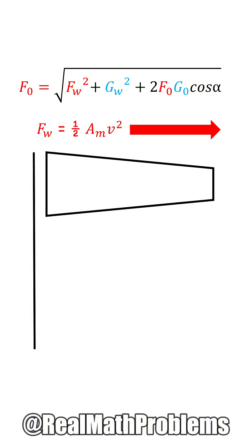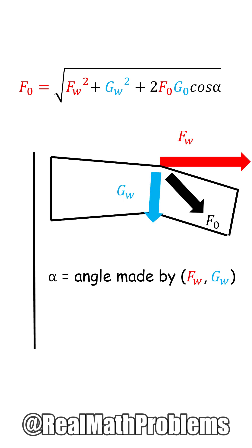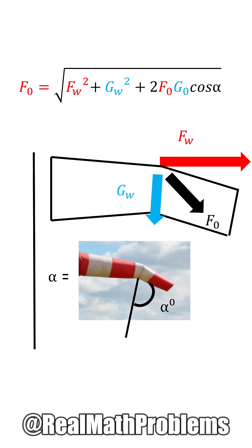The force of the wind is Fw, which is shown as the kinetic energy of the air mass and its speed. Gw is the gravitational force, made by the windsock mass times the constant 9.81. And alpha is the angle made by the wind and gravity vectors, or the angle that the end stripe of the windsock makes.